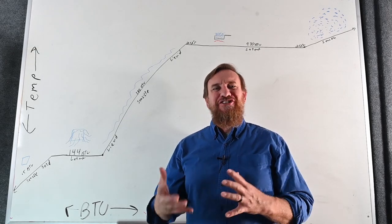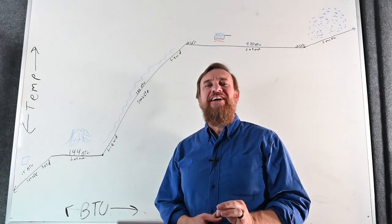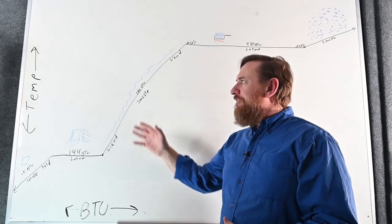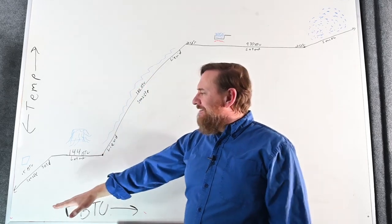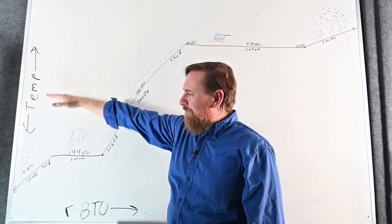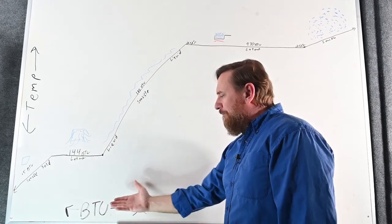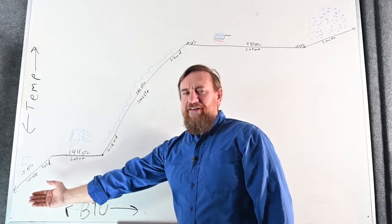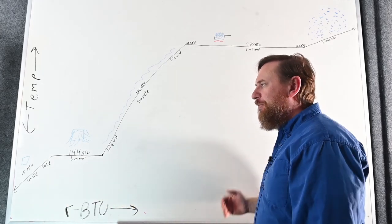We've talked a lot about BTUs and changing state, and we have a few more details to add. Here we've put together a little chart. As the temperature goes up on this side, it gets higher or lower. Across the bottom are our BTUs — less BTUs on this side and more BTUs over here.